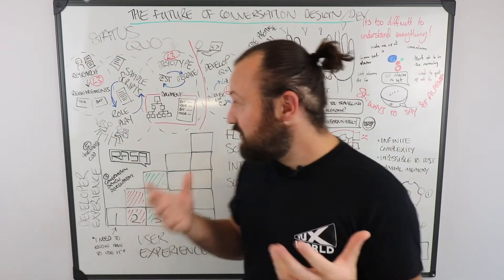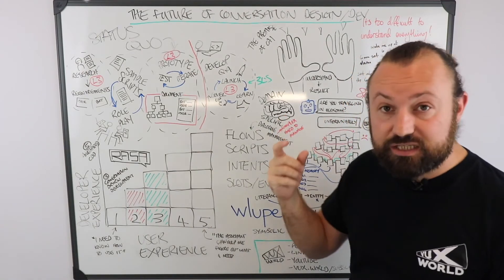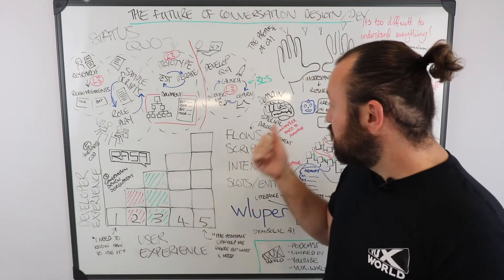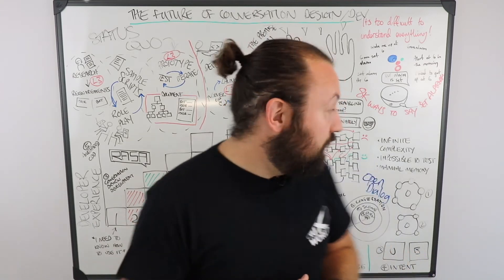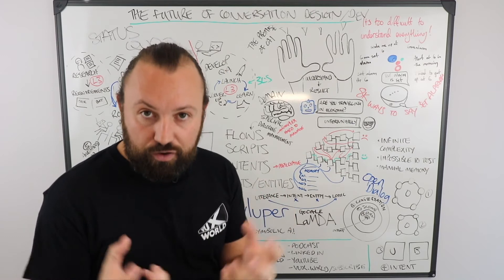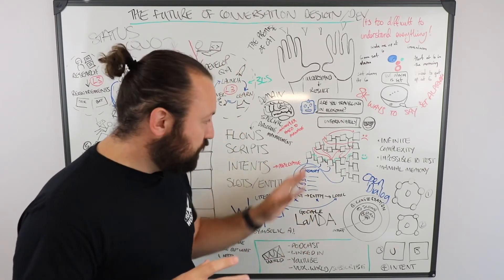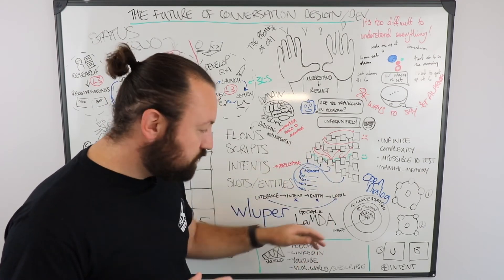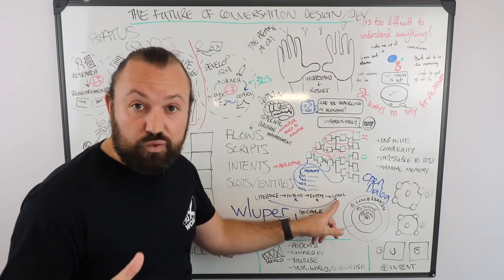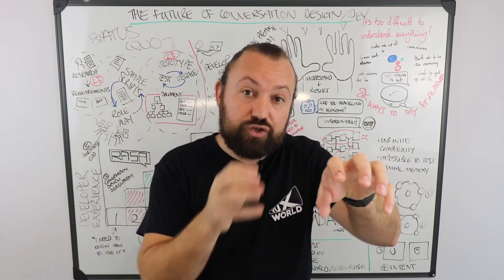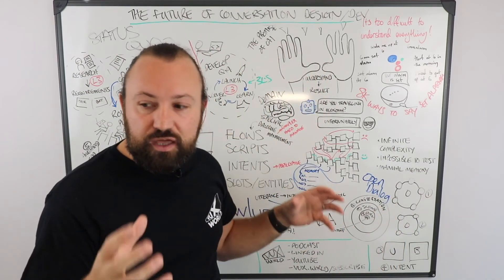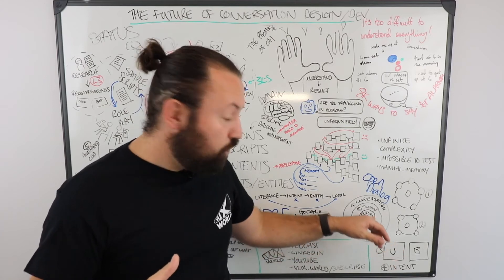As we start to get more domain-specific NLU, we're going to see certain systems actually be able to manage the bulk of conversations. A conversation designer's job will become more about finding, defining, and writing content in a way that's fit for conversational consumption — because something written to be read is different from something written to be said. The conversation designer's job is going to become a lot more about content and copywriting. As the technology gets better, rather than defining flows, we're going to be defining outcomes and understanding and measuring how we're performing against those outcomes.